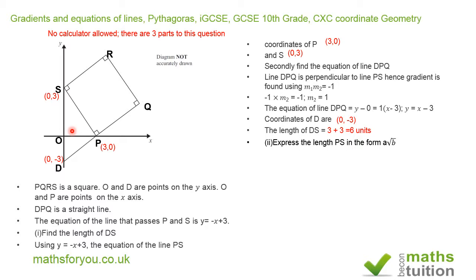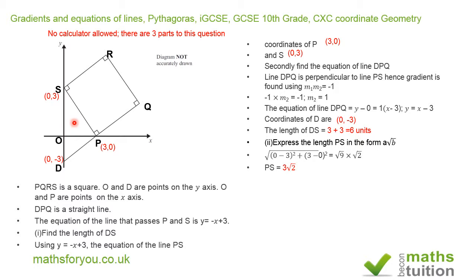So 3² for OP plus 3² for OS gives us 18, and that equals PS². So PS = √18. The square root of 18 is the same as √9 × √2, since 9 × 2 = 18. The square root of 9 is 3, therefore PS = 3√2. The length of each side of the square is 3√2.